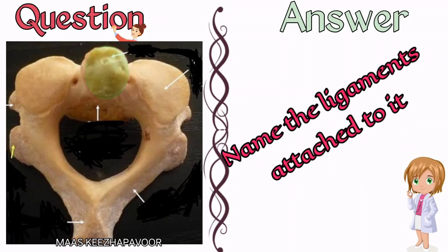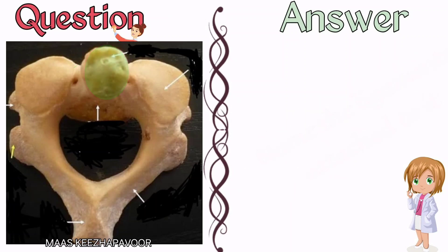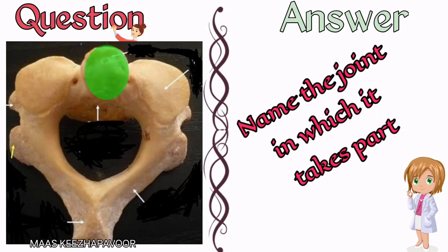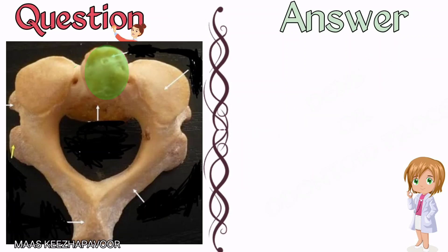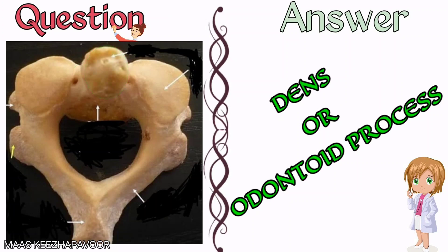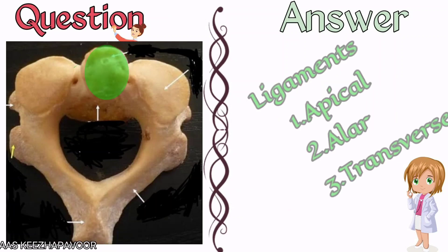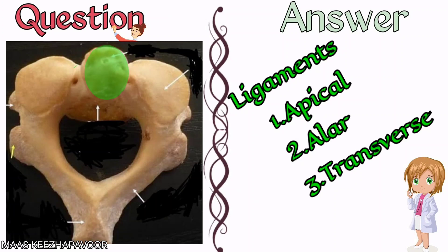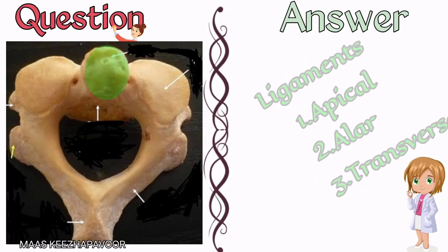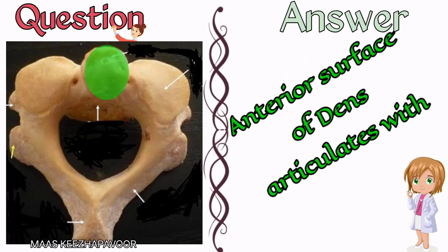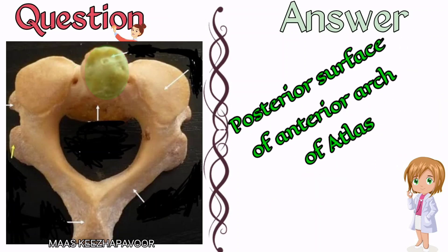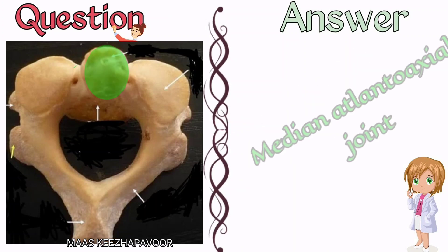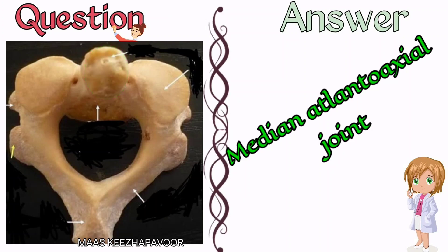Identify the coloured structure, name the ligaments attached to it, and name the joint in which it takes part. The coloured structure is dens or odontoid process. The ligaments attached to dens are apical ligament, alar ligament, and transverse ligament. The anterior surface of dens articulates with the posterior surface of the anterior arch of atlas to form the median atlanto-axial joint.